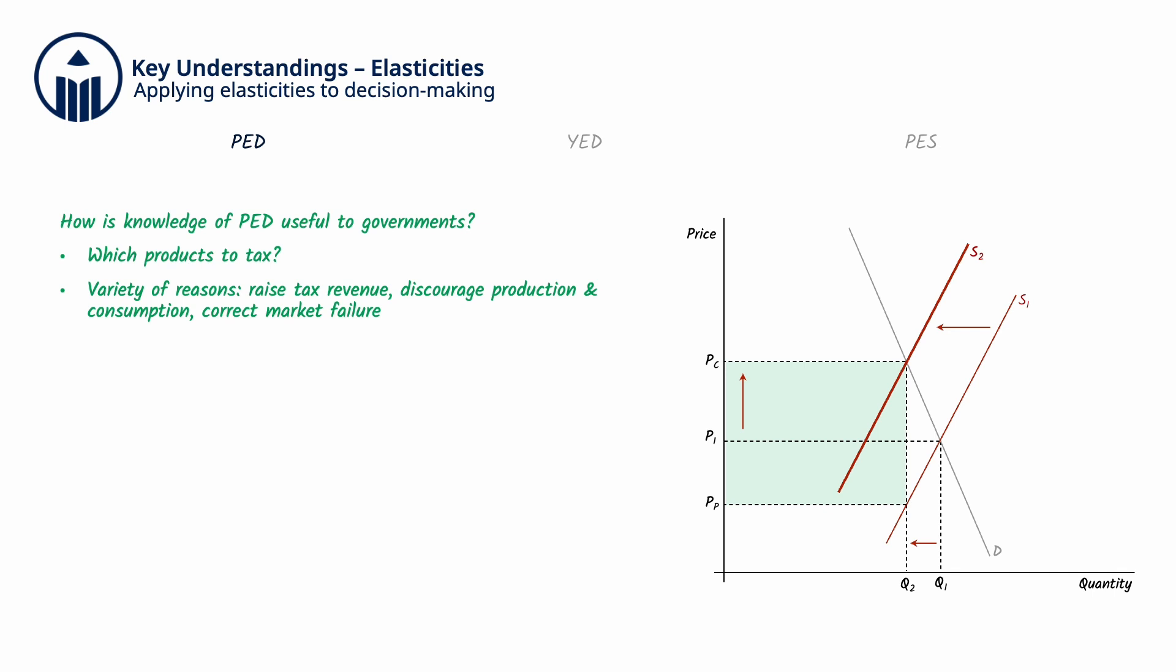For example, cigarettes typically have inelastic demand, so increasing taxes on them can effectively raise revenue while potentially reducing consumption for public health benefits.